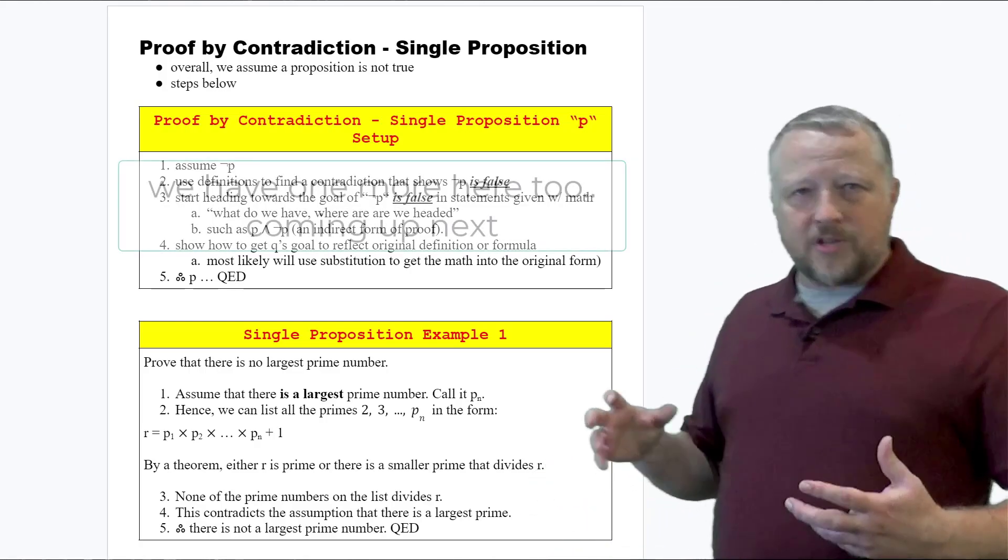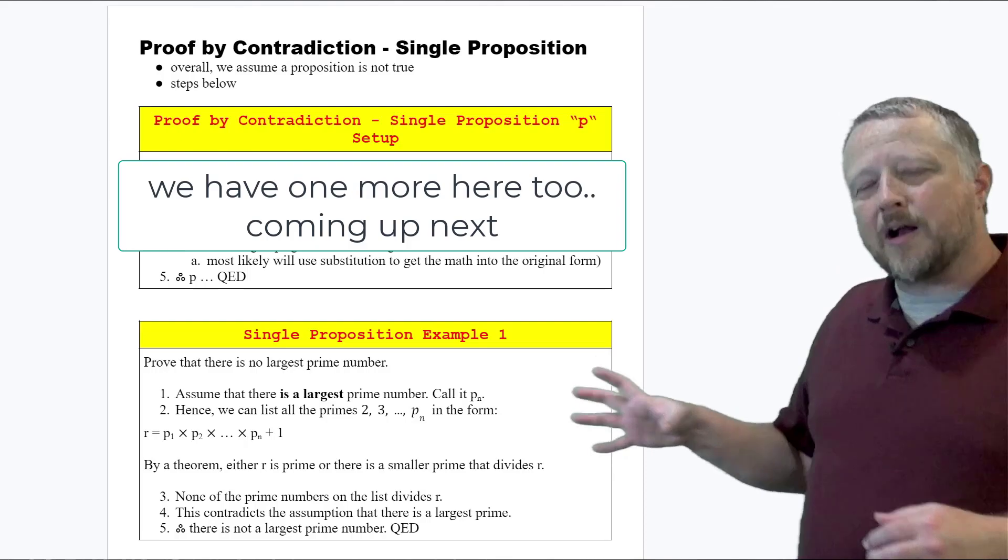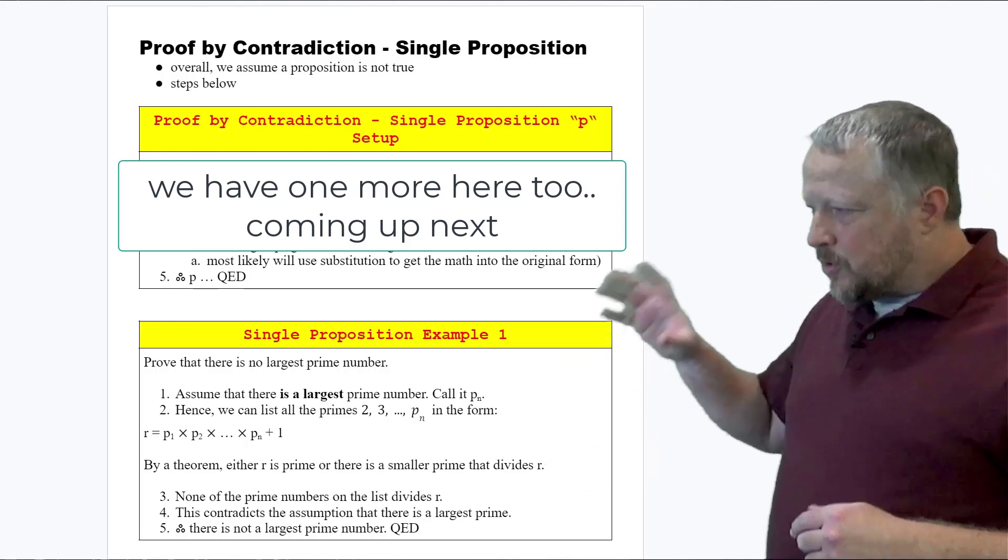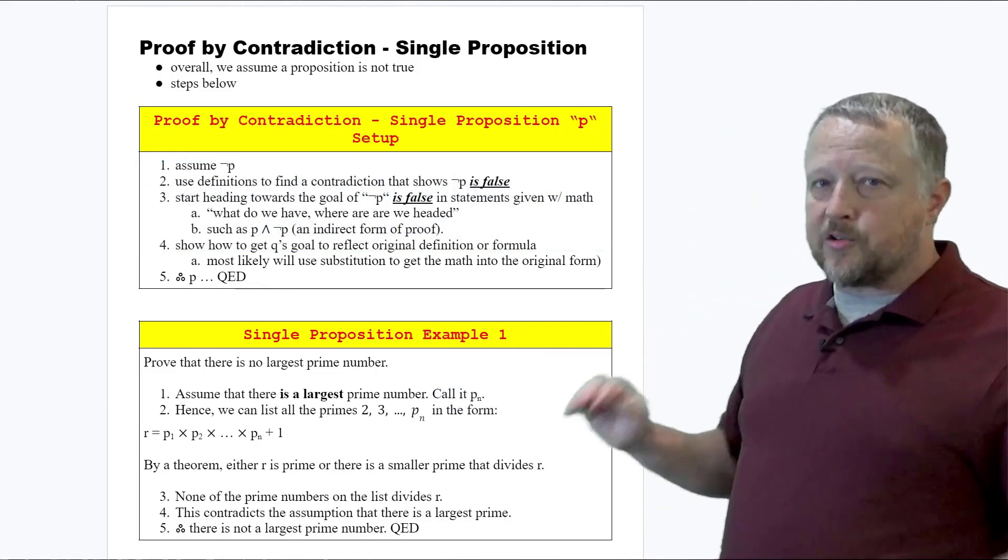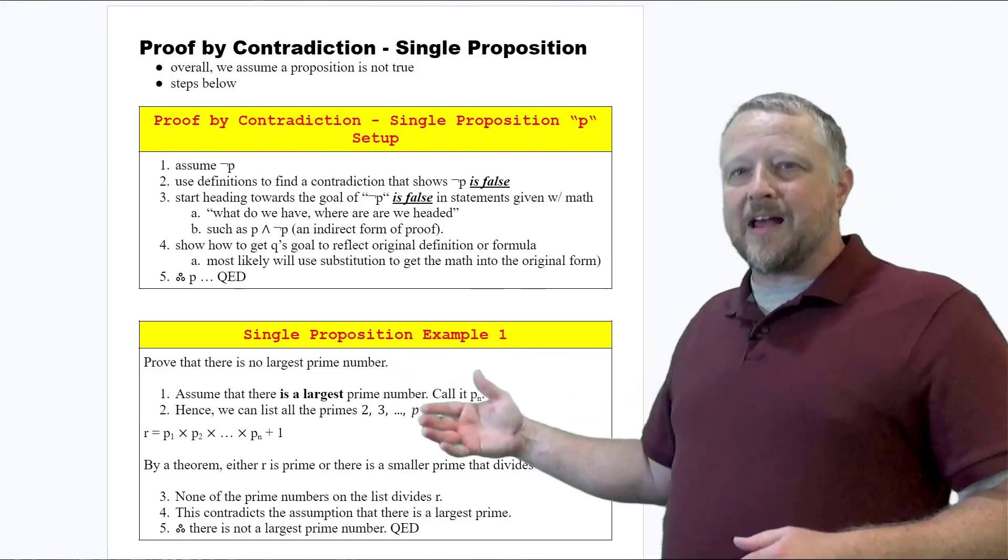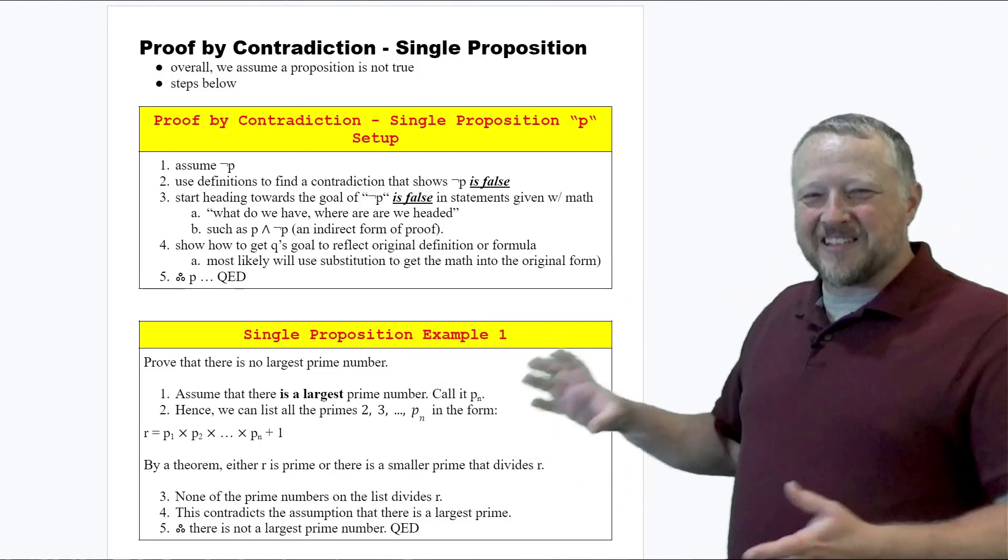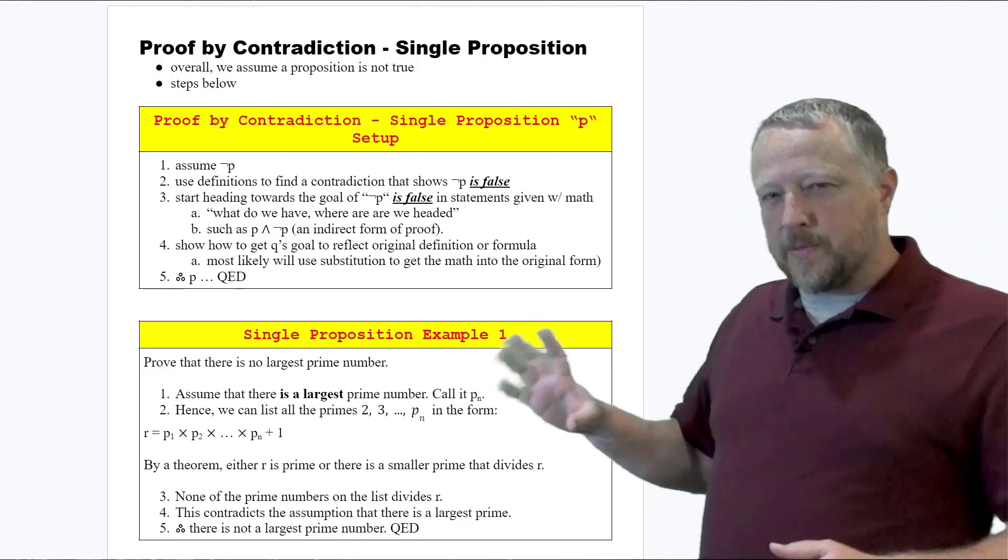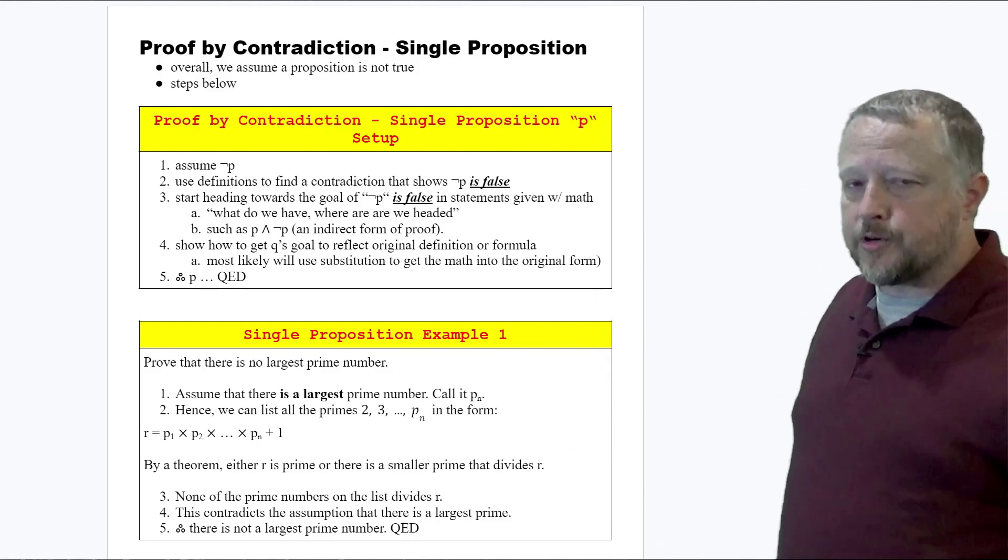There are other examples of this that I'd like you to explore too. This was straight from the book - I'm not crazy about this one. Explore some other ones, but be very careful. This whole thing is just p. There's not a q. There's no way to convert that from an 'if-then' to do this exact type of statement. Be careful which examples you're looking at for proof by contradiction.